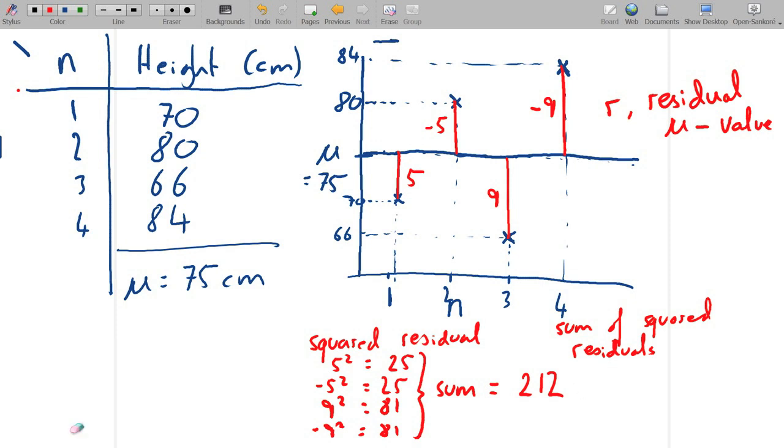The next step is to determine the mean of the squared residuals. So we take the sum of 212 divided by 4, and that equals 53.